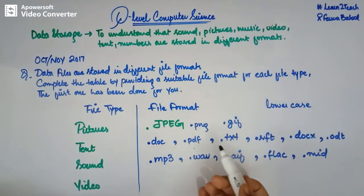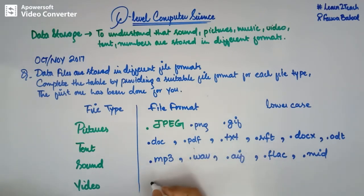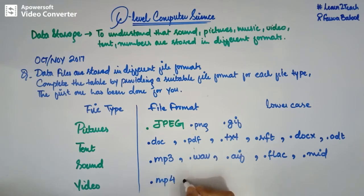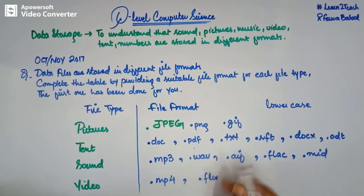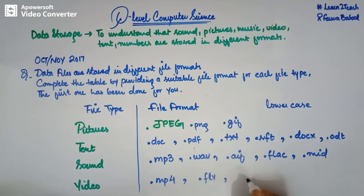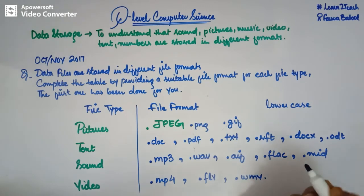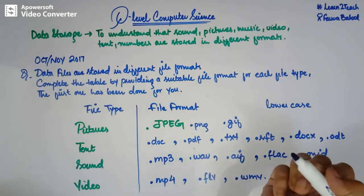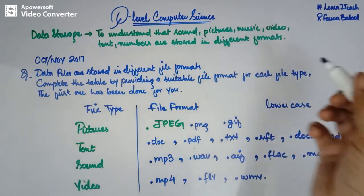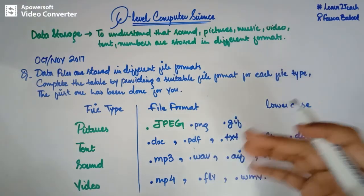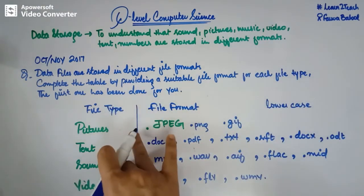For video, we are going to have the .mp4 format, then we have .flv, then we have .wmv. You can also search for other file formats — you can Google it and search on the internet, where you will find a number of file formats for particular file types.